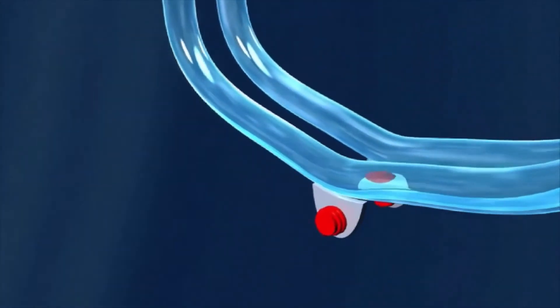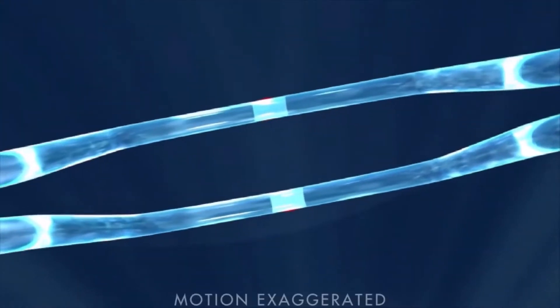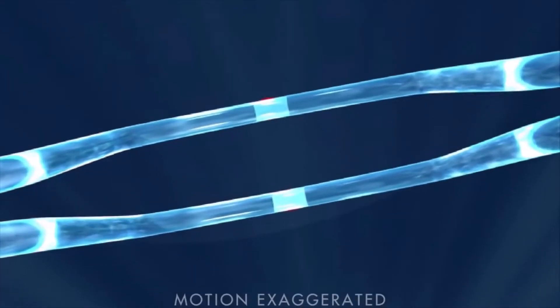This is achieved by exciting the measuring tubes with an electromagnetic exciter in its first resonance frequency. When no mass is flowing, the two tubes oscillate symmetrically.